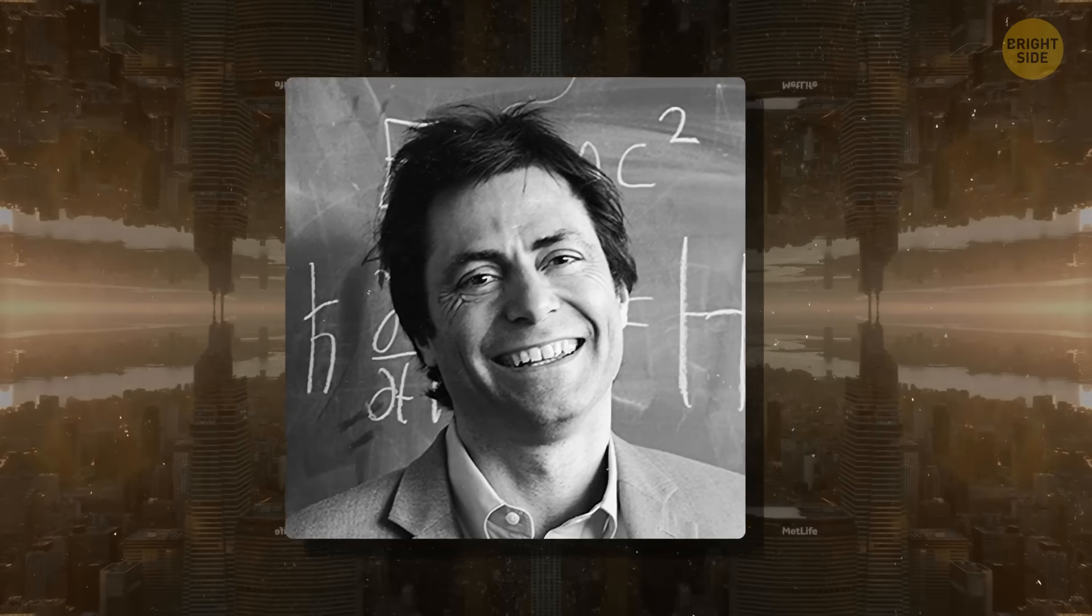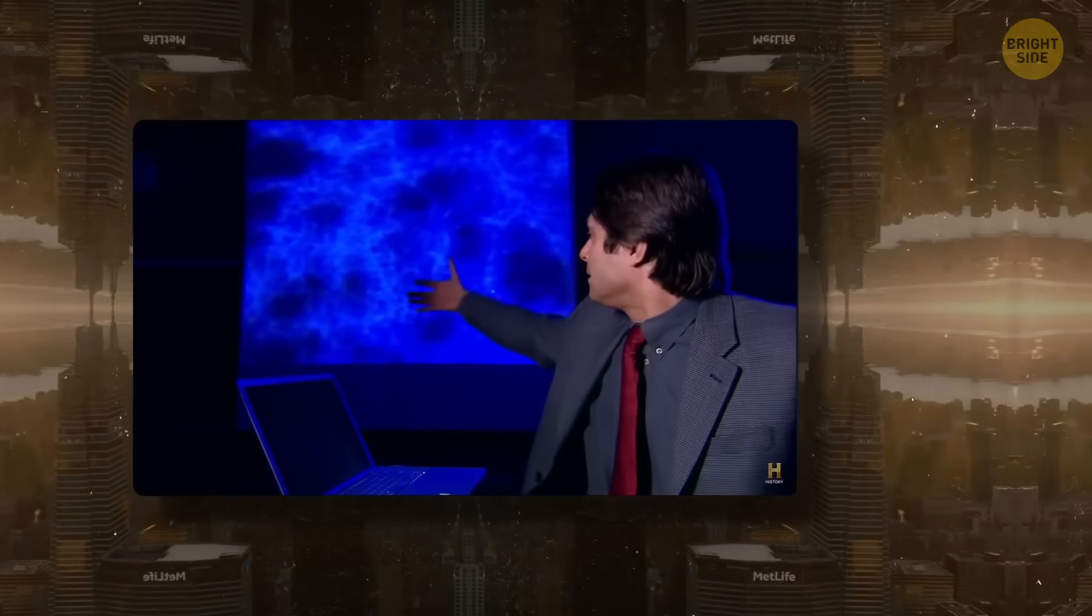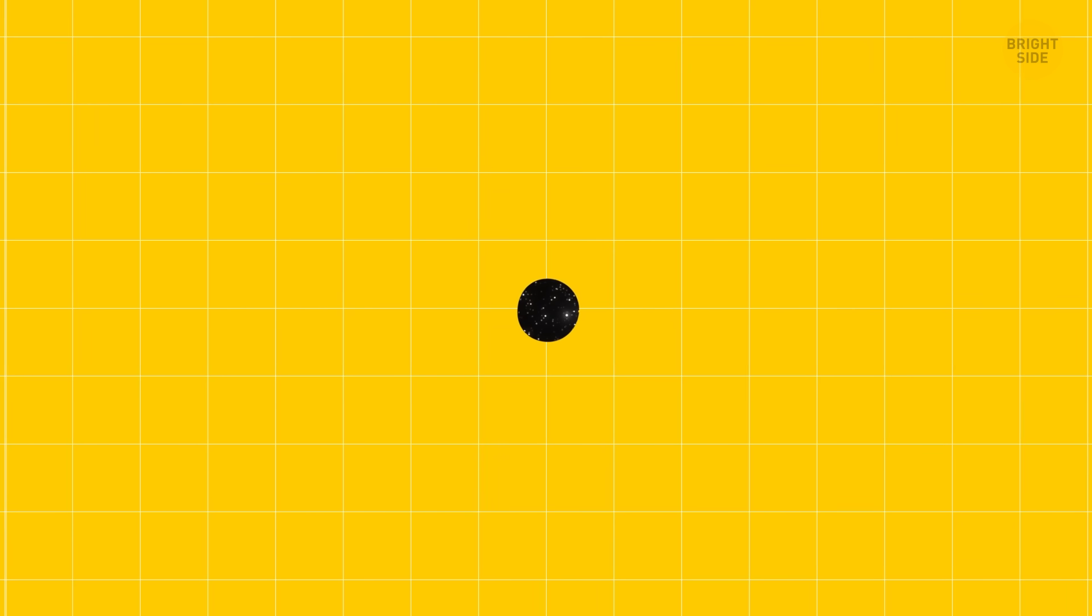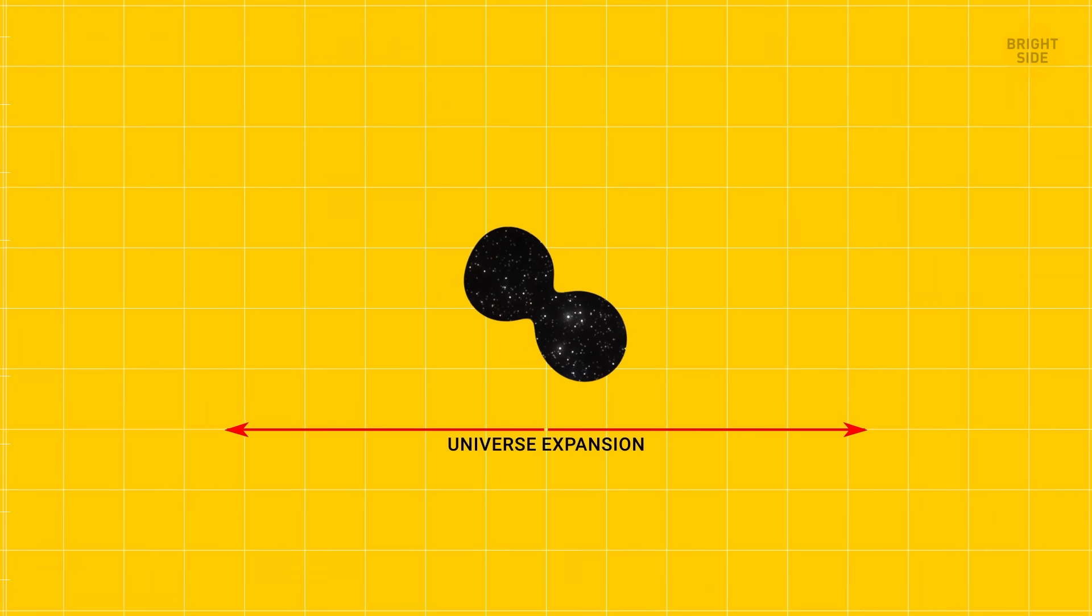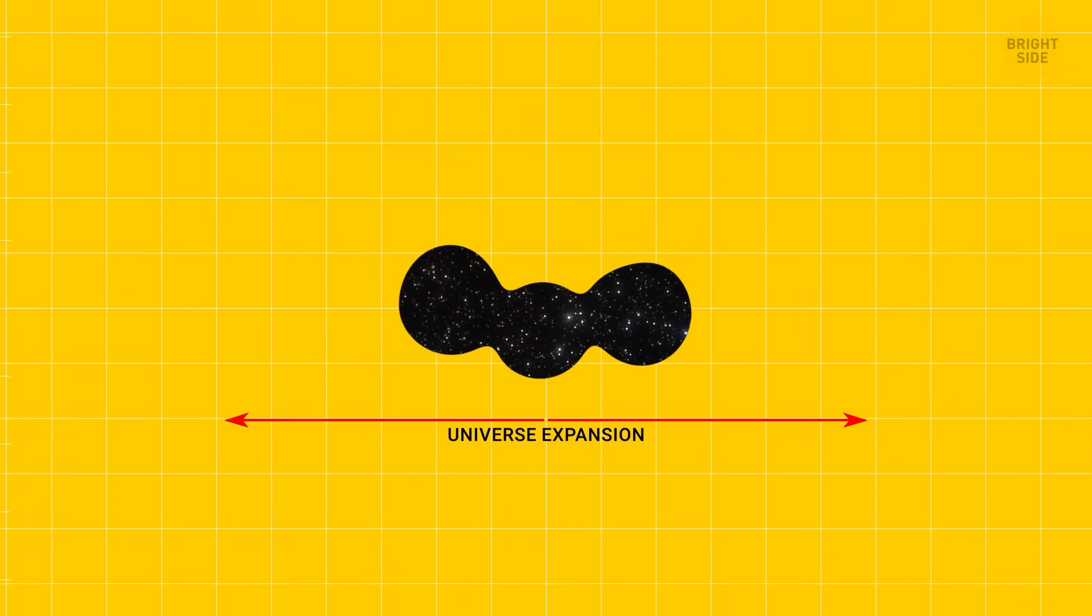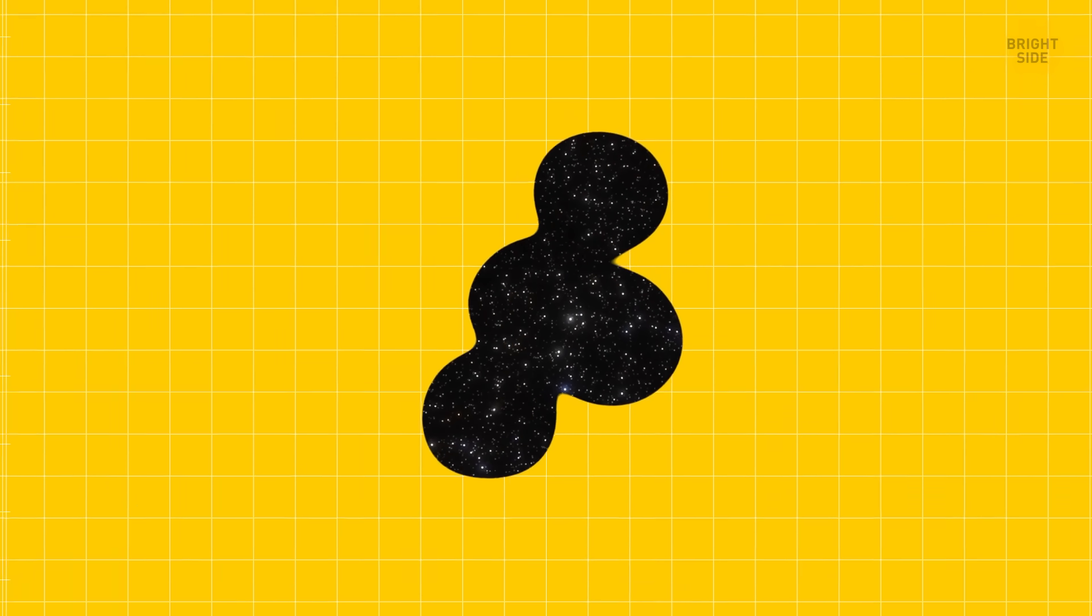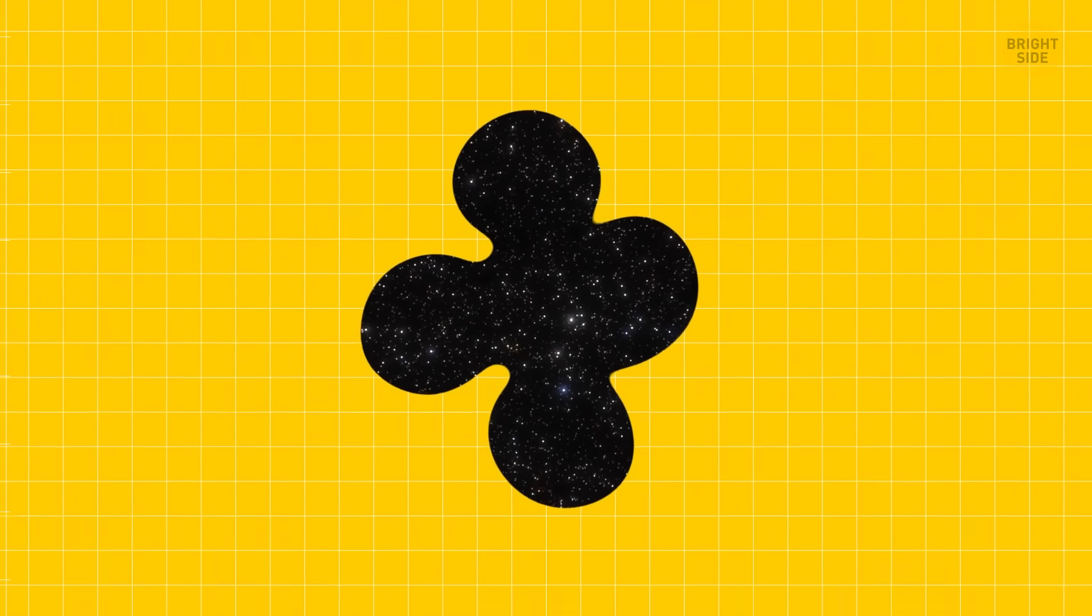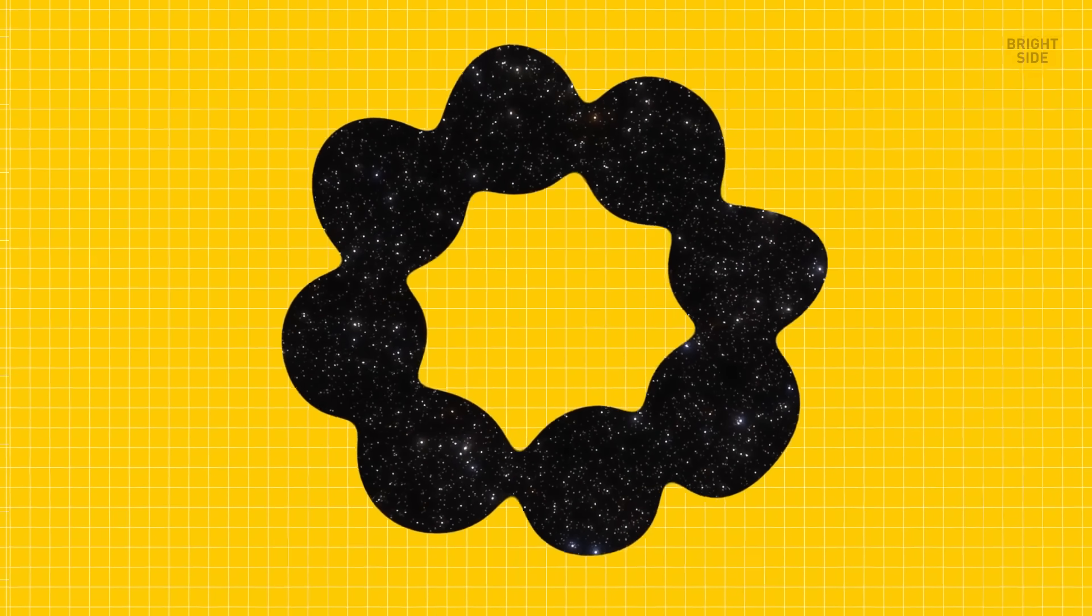Well, Max Tegmark, for example, talks about four levels of universes and multiverses. Level one is the extension of our world. Our universe is a big place, and in an infinite universe, there would be infinite chunks like ours, each with its own story. Most of these chunks might look different from ours, but because there are so many, some might look just like ours, but they'd be really, really far away.